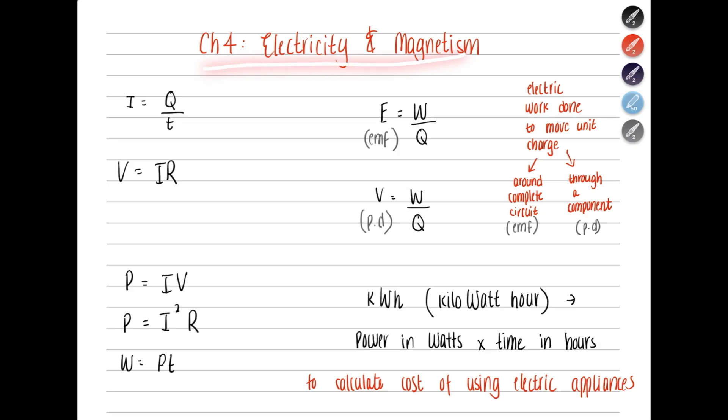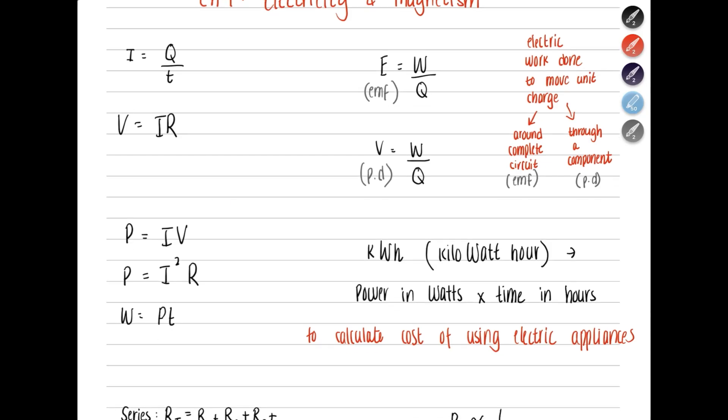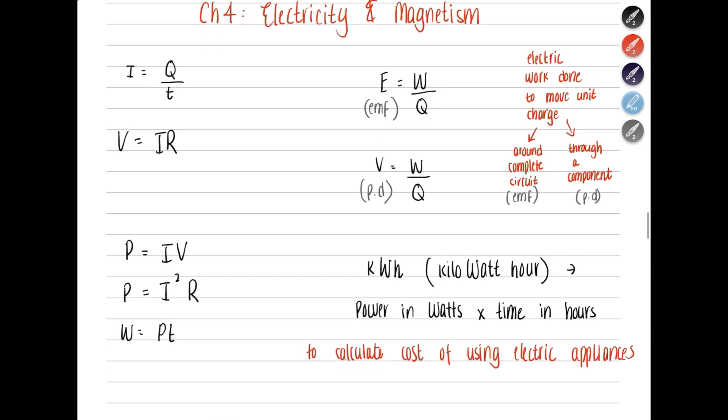Now let's move on to electricity and magnetism. Remember, I is current equals charge over time. So electric current is basically the charge passing a point per unit time. I has the unit of amperes. Q has the unit of coulombs. Then V equals IR. That's Ohm's law. And then we say that the voltage is constant. That shows that current and resistance are inversely proportional to each other.